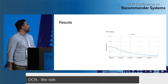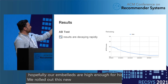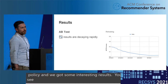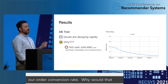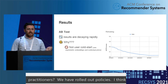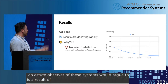We rolled out this new policy and got some interesting results. We saw this rapidly decaying purchase-through rate, which is our order conversion rate. Why would that happen? An astute observer of these systems would argue this is the result of static embedding maps — for example, new users and new items come on board and we can't pick them up. But as I mentioned, we have asymmetric embeddings and contextual priors that help with that situation. Let's consider another hypothesis: drift.